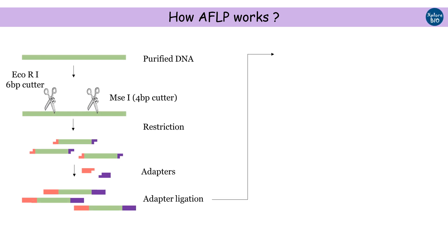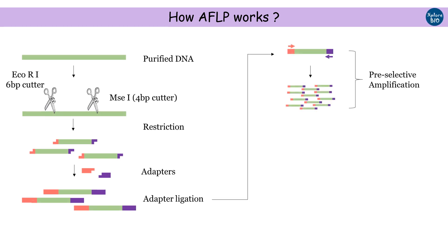Amplification is done in two phases. The first phase is known as pre-selective amplification and the second is selective amplification. In pre-selective amplification, it is the first round of amplification in which a few fragments are selectively amplified. During restriction, thousands of fragments are obtained which are very difficult to separate and analyze. To reduce the number of fragments amplified, primers with an additional nucleotide at the 3-prime end are used.